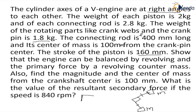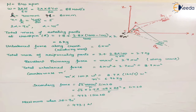The stroke is the distance between the two extreme positions of the piston as it does reciprocating motion in the cylinder — the maximum distance it can move inside the cylinder. We have to show that the engine can be balanced by a revolving counter mass, find the primary forces, the magnitude of the center of mass from the crankshaft, and the resultant secondary force at 840 rpm. So omega equals 2π × 840/60, which is 88 radian per second.